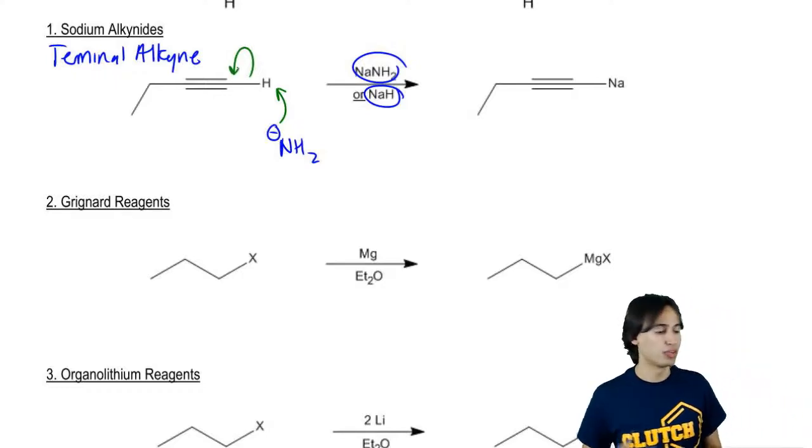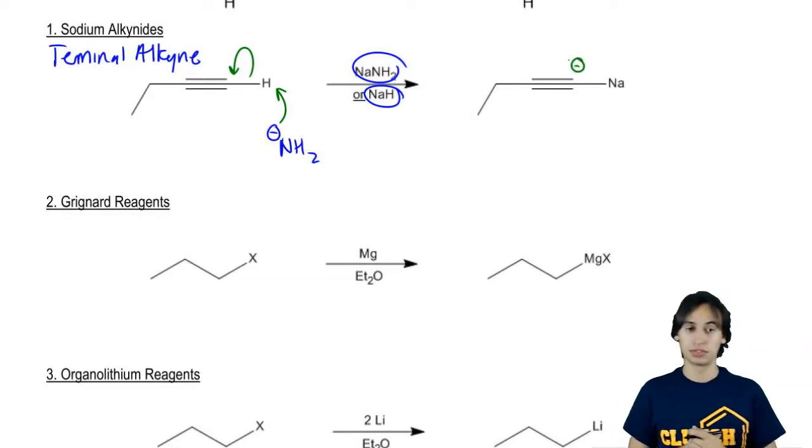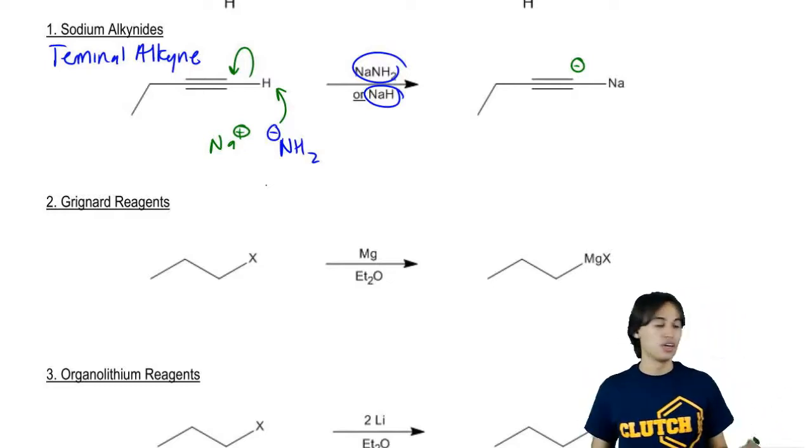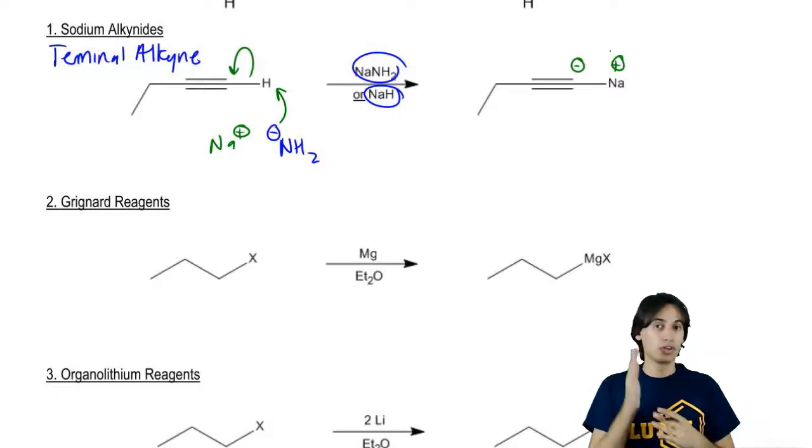Now that strong base, there's a lot of different strong bases we could use, but typically it's NaNH2 or NaH. These bases have the ability to pull off the most acidic hydrogen on that molecule. And when we learned in the acids and base chapter how to predict acidity, we would have found that the H at the very end of that terminal alkyne is very acidic compared to the others. So I would grab that H with my base and I would give a negative charge to my carbon.